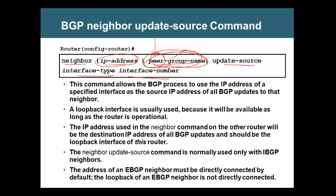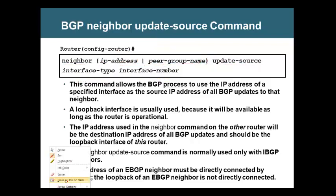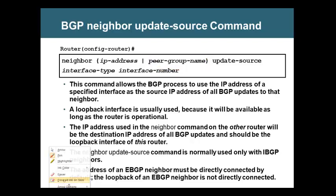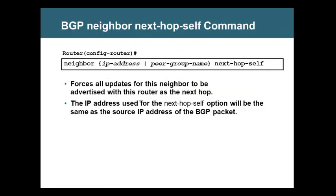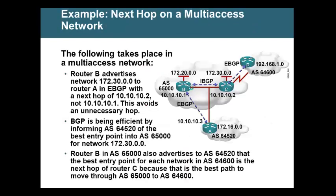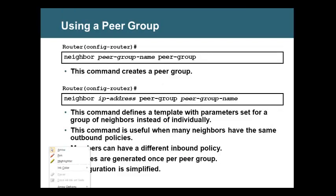Whenever you have many neighbors with similar configuration to be done, instead of going to each neighbor's IP address and saying update source loopback 0 repeatedly for many neighbors, you can put all the neighbors in a group. Whatever you want to configure for the group, you configure once and call it in one neighbor statement. A lot of peer group we saw, but we did not see what it means.